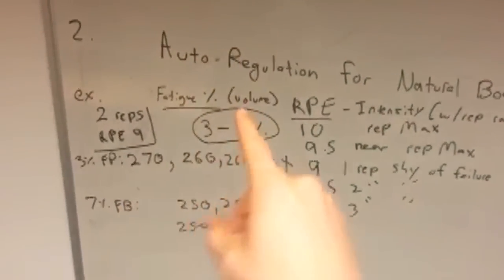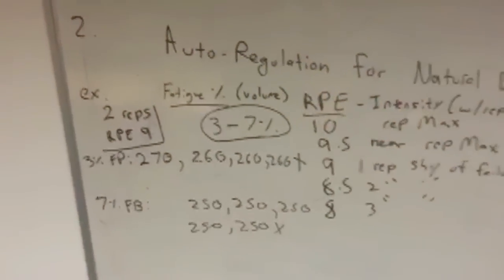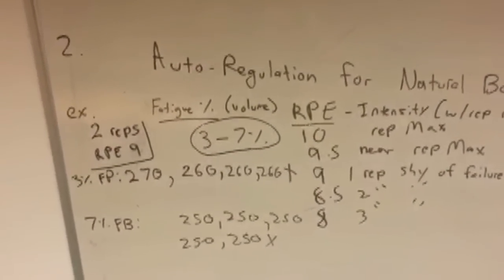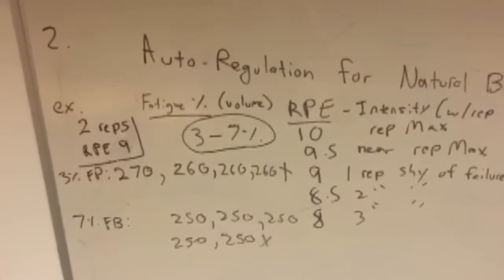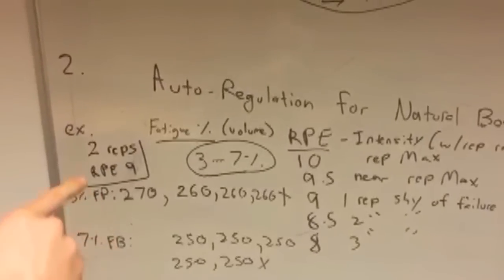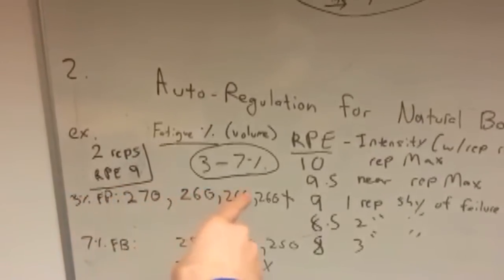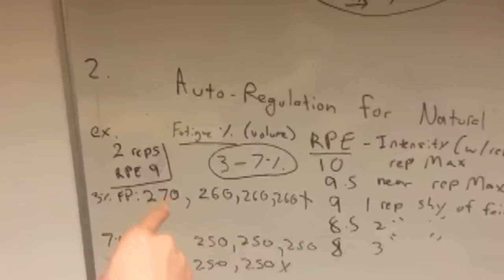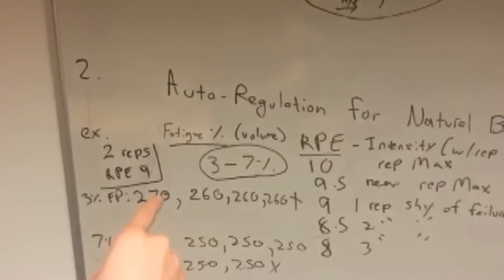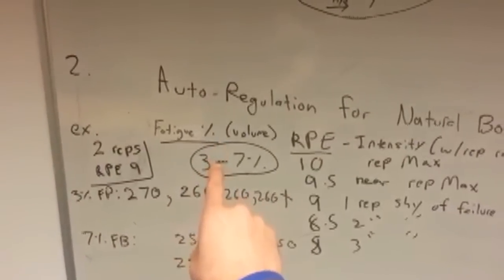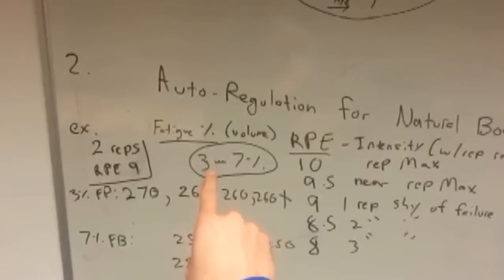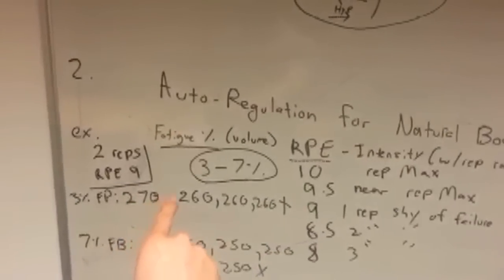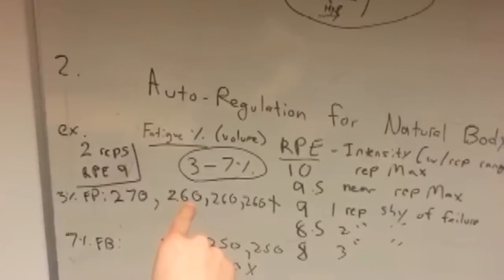Then we have volume. The way we can auto-regulate volume is with what's called a fatigue percentage. A fatigue percentage is how much you reduce your load by if you're using a back-off set scheme. So if you were going to auto-regulate your volume, you'd start with something like: do two reps at an RPE of nine — meaning choose a load you could do for two reps and still be one shy of failure, basically your three rep max. In this example, we'll use 270, maybe someone's bench press. After your first set of two reps at RPE nine, you reduce the load by three to seven percent.